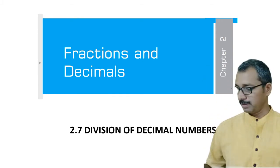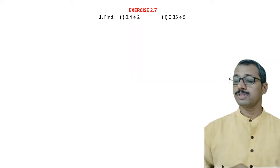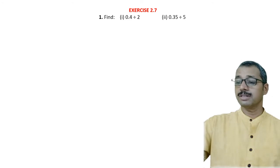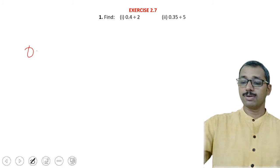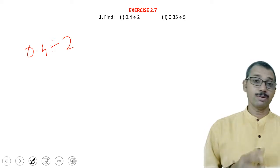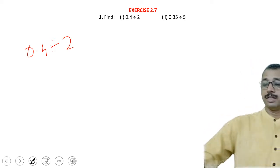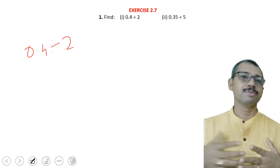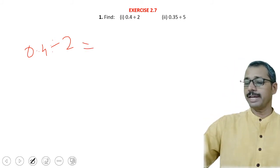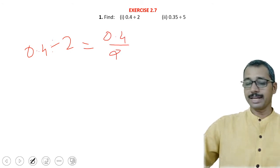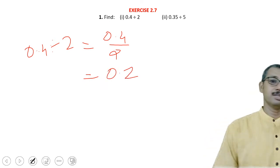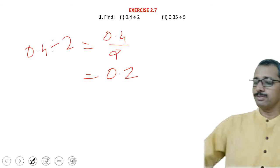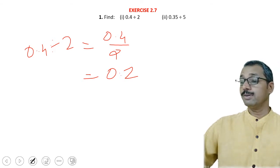Here is exercise 2.7. The first problem is 0.4 divided by 2. One is a decimal number and the other is an integer. We can write this as 0.4 upon 2. You can directly divide: 4 divided by 2 is 2, and there is one decimal place, so the answer is 0.2.